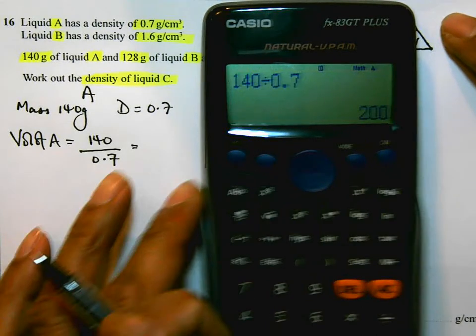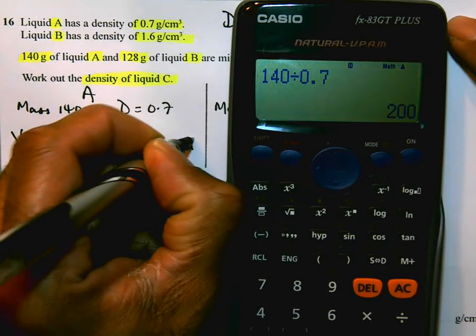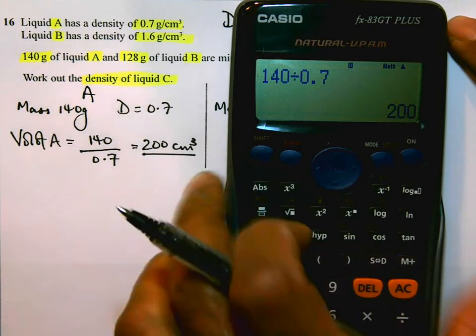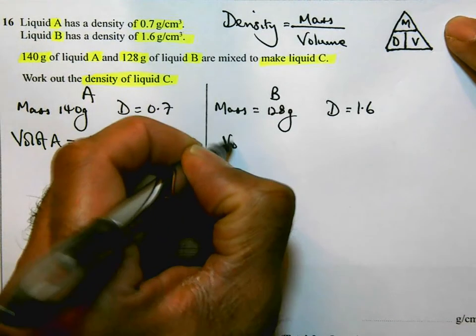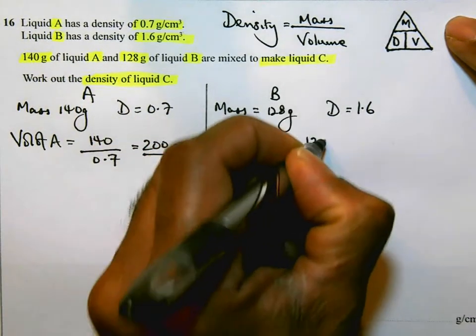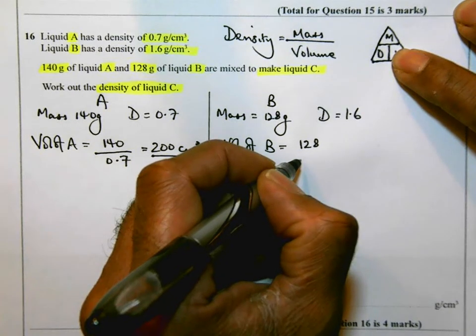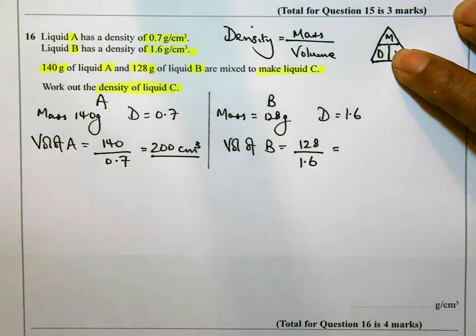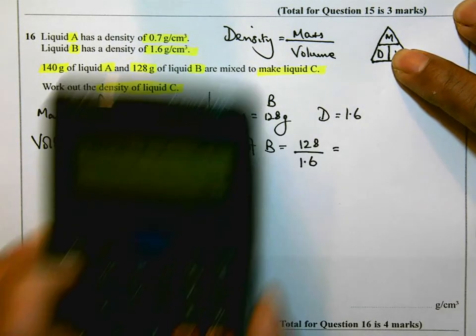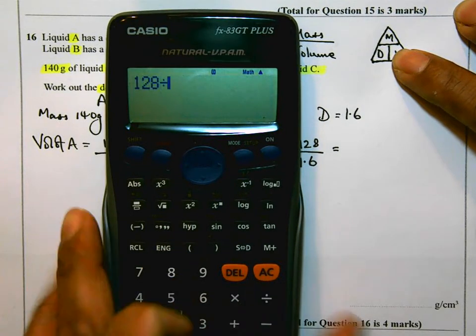I am going to do a similar calculation for B. The volume of B is going to be 128 mass divided by density. 128 divided by 1.6, that is 80 centimeters cubed.